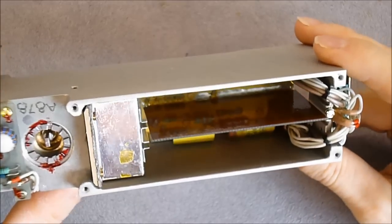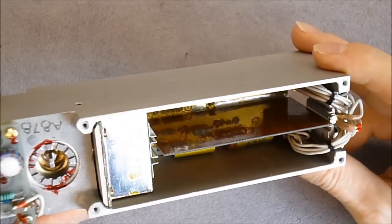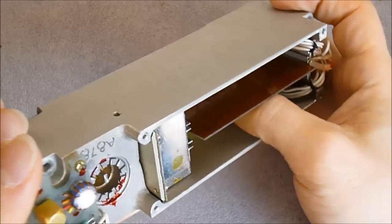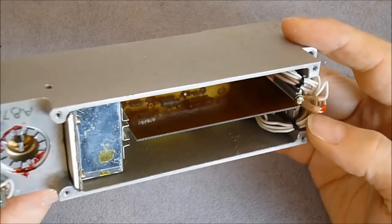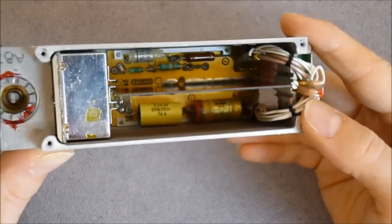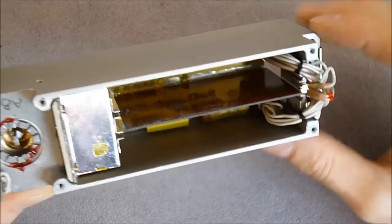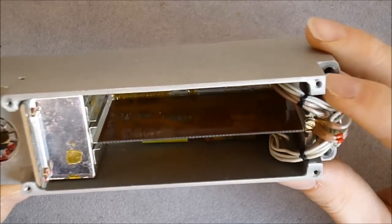So here on the bottom we have capacitors. This one seems quite weird and sad maybe. Promisic is the brand. And one diode here. Some resistors.